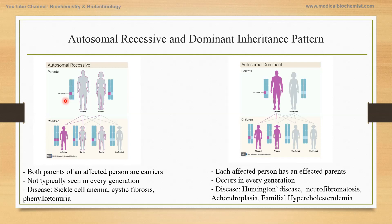In the family, there can be a carrier who doesn't show any effect, or there can be a progeny which has no mutation in the gene. So in the case of autosomal recessive, both parents of an affected person are carriers. It's not typically seen in every generation because you can have multiple possibilities. Examples include sickle cell anemia, cystic fibrosis, and phenylketonuria.